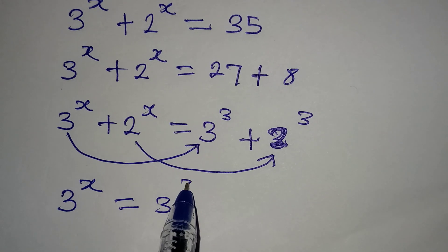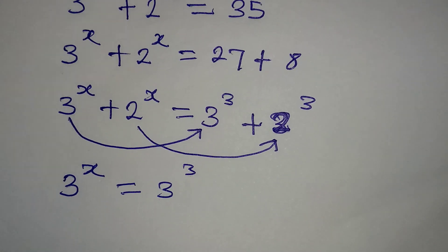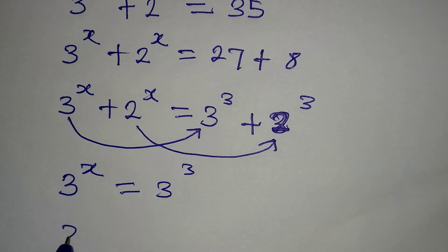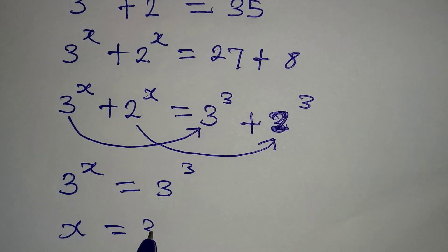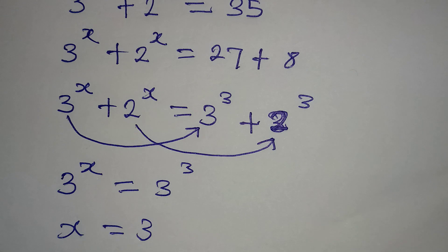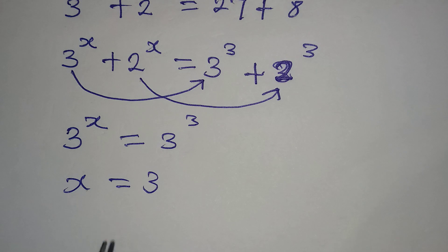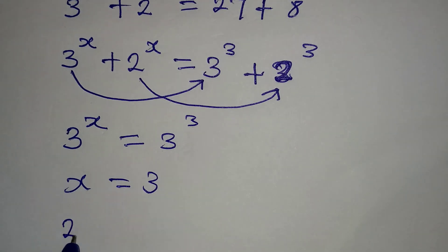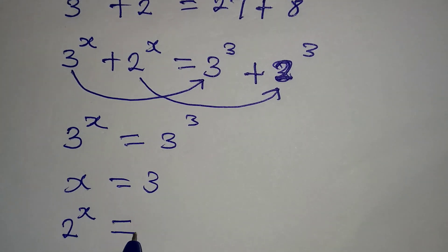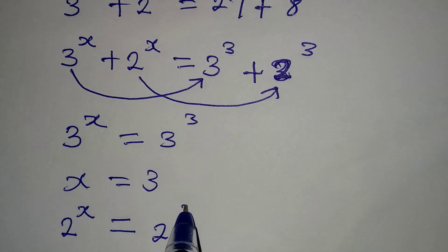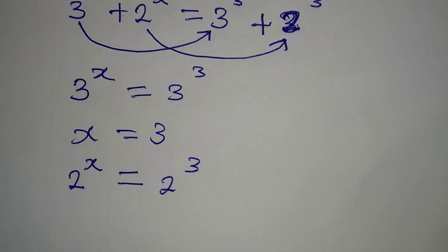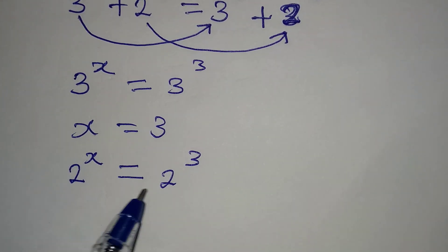For the term with x, we have 2^x equal to 2^3. Going to the second term with x, we have 2^x equal to 2^3. We have the same base, therefore the powers should be the same, so x = 3.